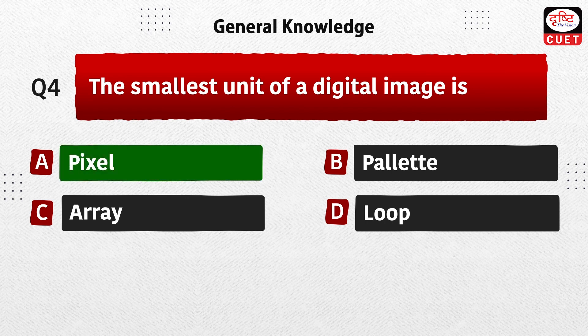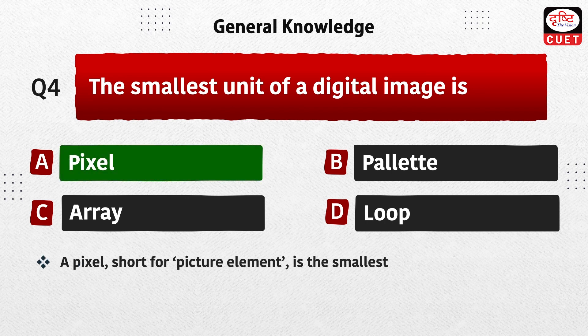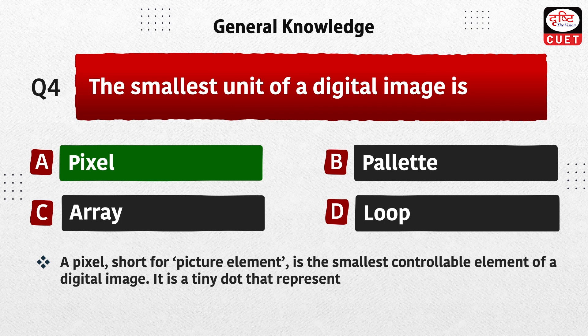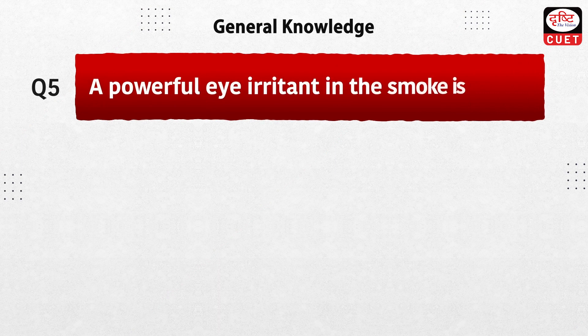Next question: the smallest unit of a digital image is — pixel, palette, array, or loop? The correct answer is option A, pixel. A pixel, short for picture element, is the smallest controllable element of a digital image. It is a tiny dot that represents a single color or shade in the image.